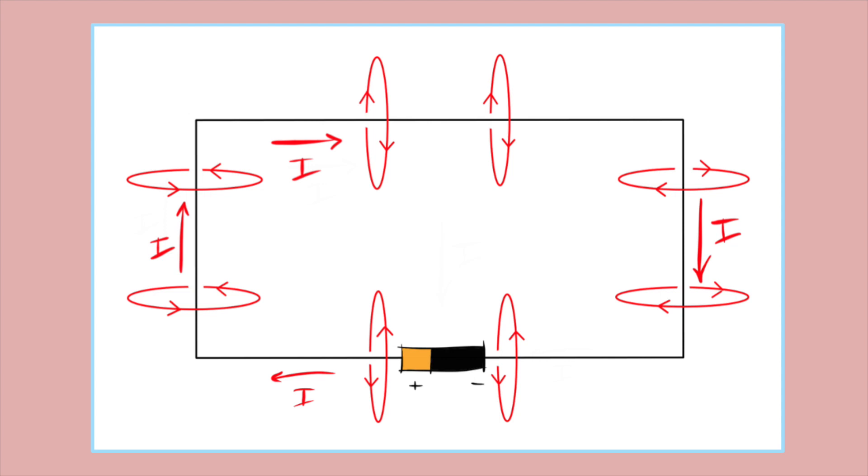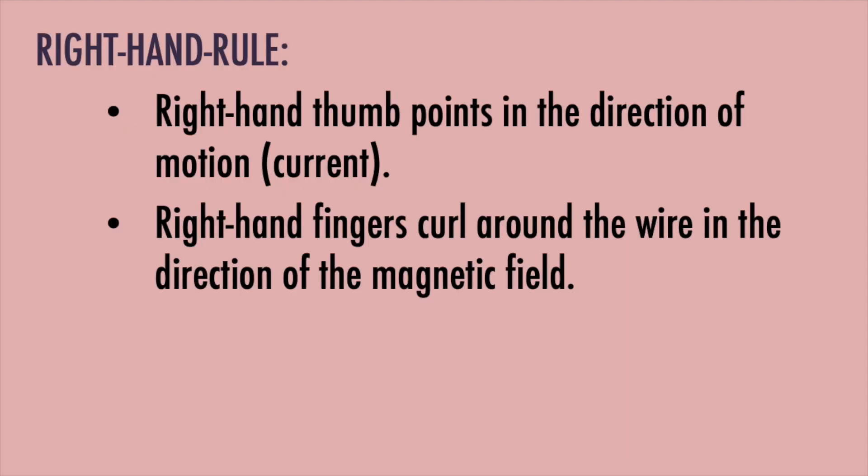You may have noticed from my illustration that there are things happening in all three dimensions. Because of this, we need a method for representing three-dimensional relationships. So I introduce to you the right-hand rule. It is very simple. Your right-hand thumb points in the direction of the motion, which in our case is the current. Now if you curl your right-hand fingers around the wire, the curve of your fingers represents the direction of the electromagnetic field. So let's try it.